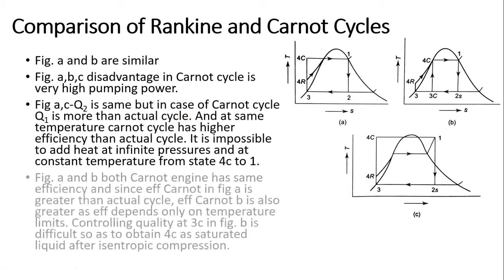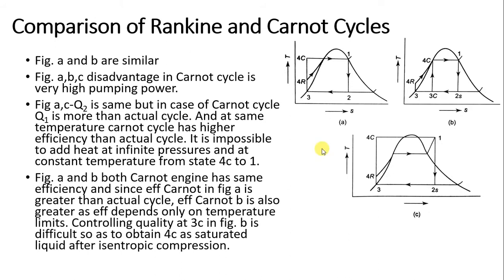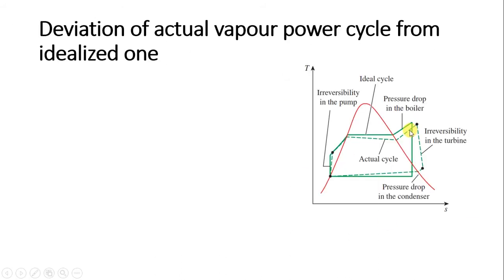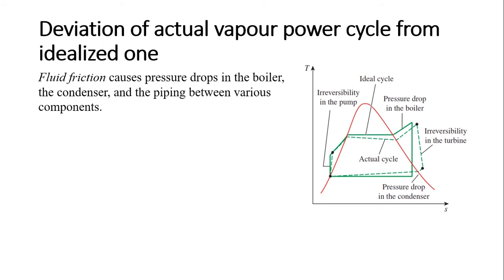We have also seen the comparison of Rankine cycles. Now we will see how the actual vapor power cycle is defined and how it differs from the idealized one. Whatever we studied was the ideal vapor power cycle; now we will see the actual vapor power cycle and the different losses present in it.